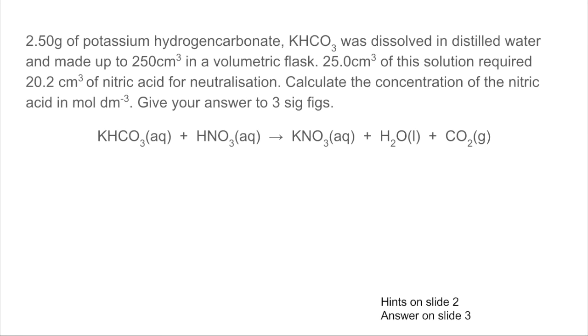So we'll have a look at this titration question. I'll go through the information and then give you some time to work out your answer. If you need some hints, then keep watching and I'll go through some hints before you tackle the question. So the question: 2.50 grams of potassium hydrogen carbonate, there's its formula, dissolved in distilled water and made up to 250 cm³ in a volumetric flask.